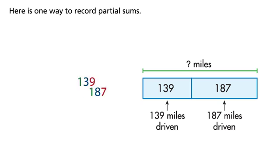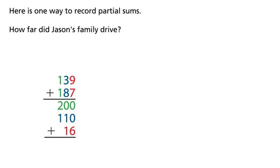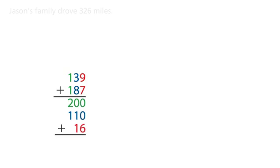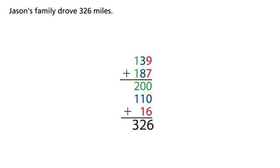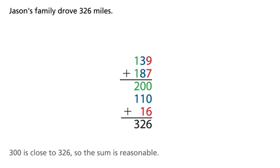Here is one way to record partial sums. How far did Jason's family drive? Jason's family drove 326 miles. 300 is close to 326, so the sum is reasonable.